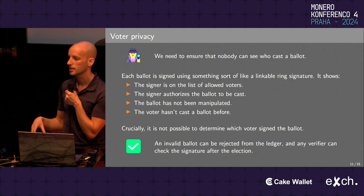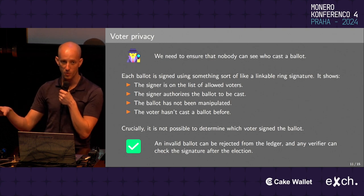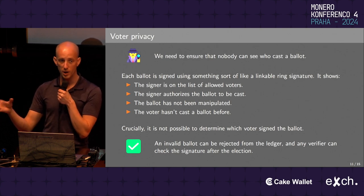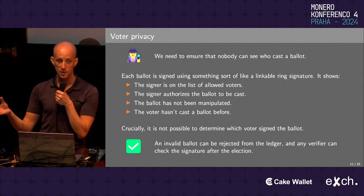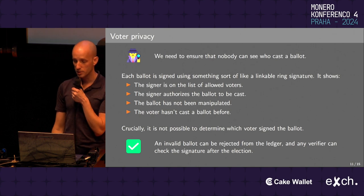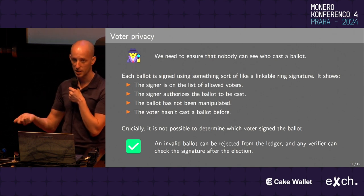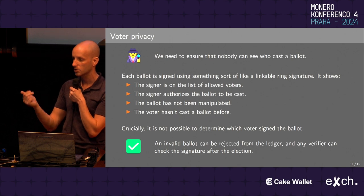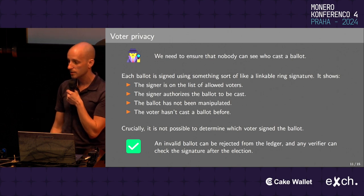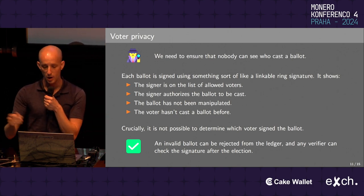Similarly to before, an invalid ballot can be immediately rejected from the ledger because of this specific signature structure, and any verifier can check this after the election to show that these properties hold.